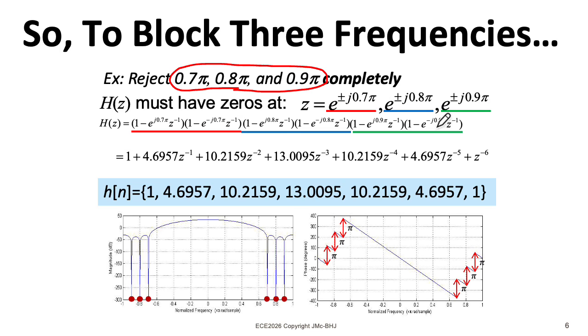I could take this system function and scale it by the number 37, in which case I would just scale all of the coefficients here by 37, and I would still be nulling those frequencies.